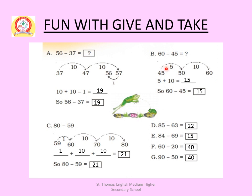Next: 60 minus 45. Start from 45 and forward count up to 60. From 45 to 50 in 5 steps, then 50 to 60 in 10 steps. So 5 plus 10 equals 15. Therefore 60 minus 45 equals 15.